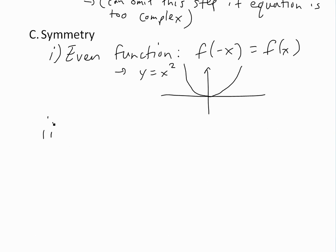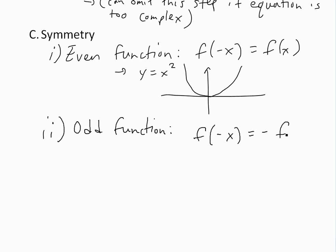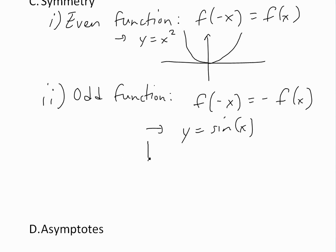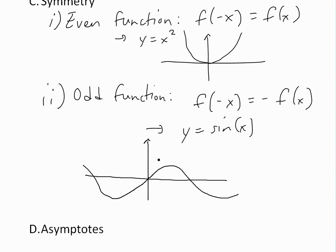The other kind of symmetric function is an odd function, where f of negative x equals negative f of x. One example is y equals sine of x. As you can see, it's symmetric about the y-axis but negatively symmetric — this is how the sine wave looks. On one side it's f of x, and on the other side it's just negative f of x.